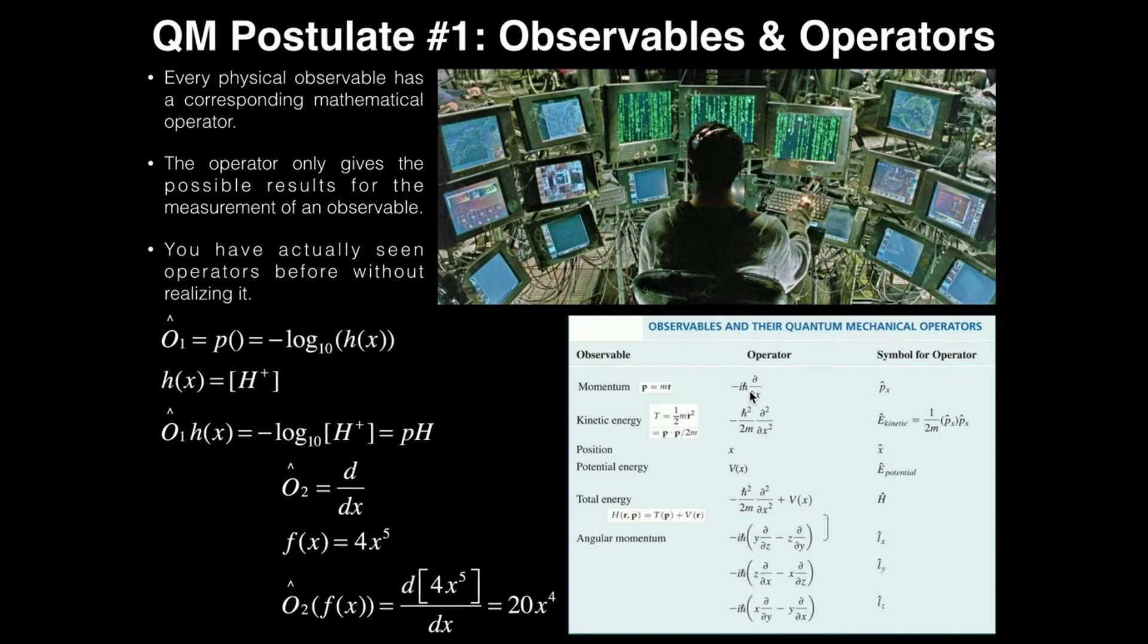And that would actually help us determine what are called expectation values, which means we expect the momentum to be, on average, this, or if we used the angular momentum operator, we would expect the angular momentum, on average, to be this value. And we would use these operators to do that.